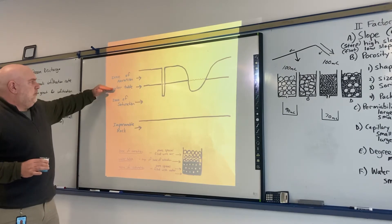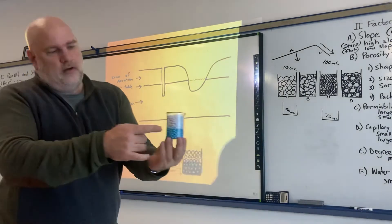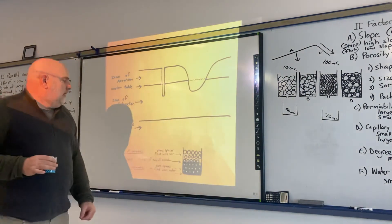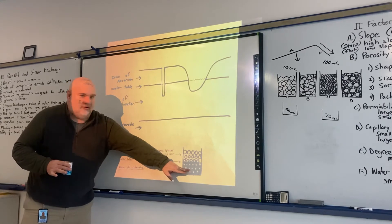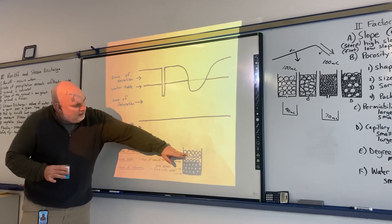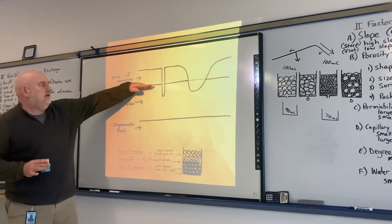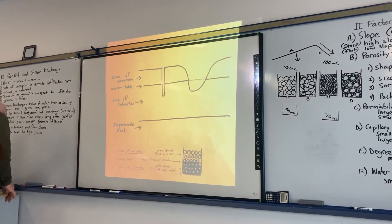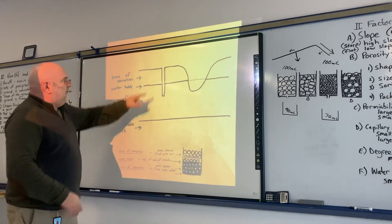The boundary between the zone of saturation and the zone of aeration is called the water table. Below the water table, all pore spaces are filled with water; above it, all pore spaces are filled with air. The water table is that dividing line between these two zones.